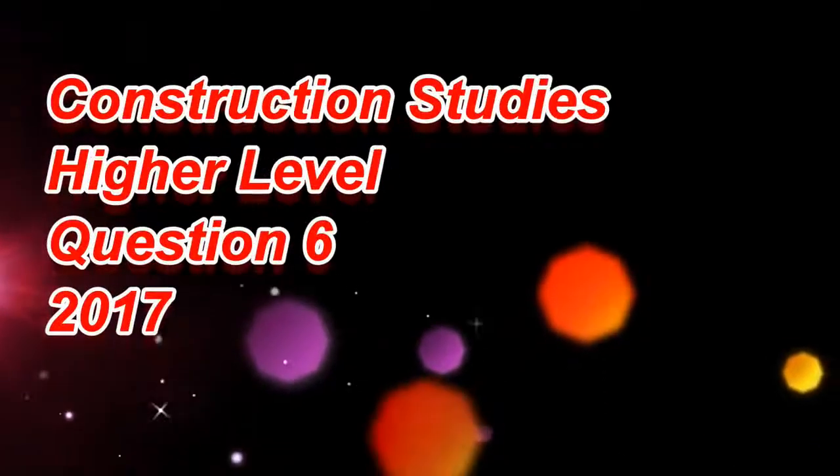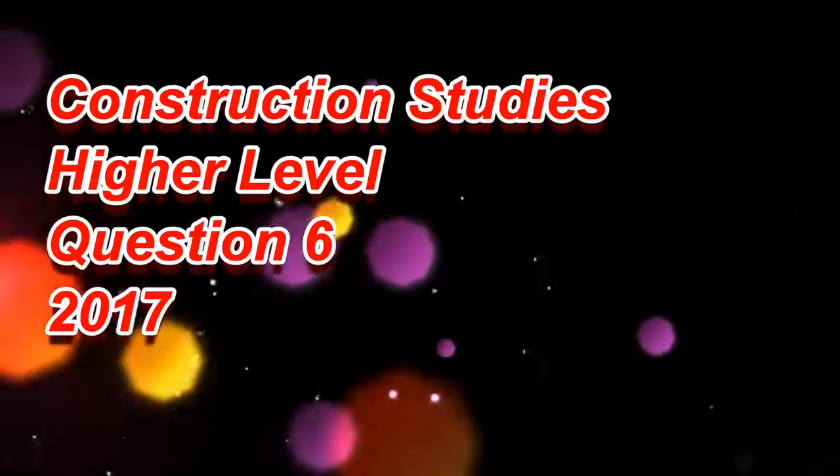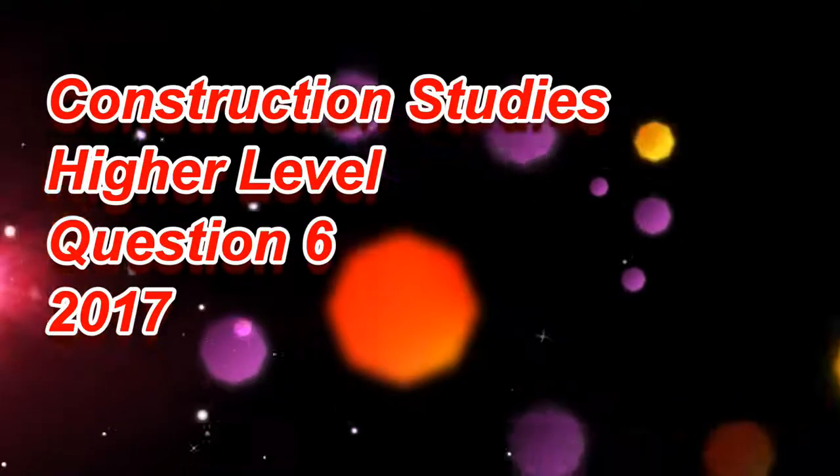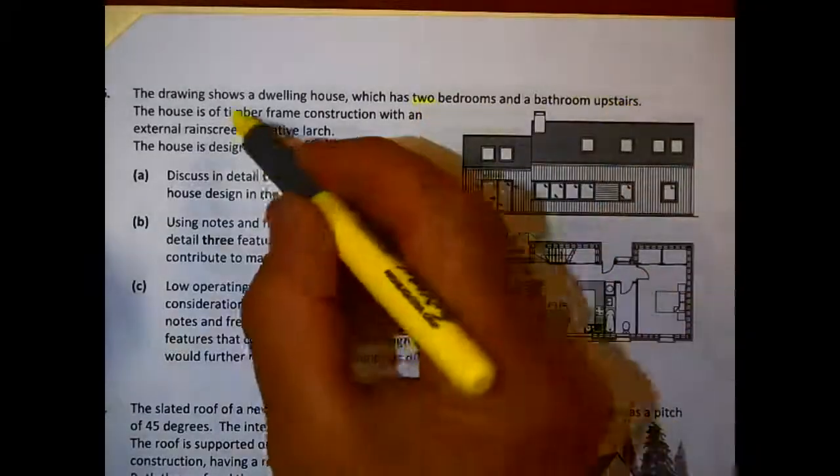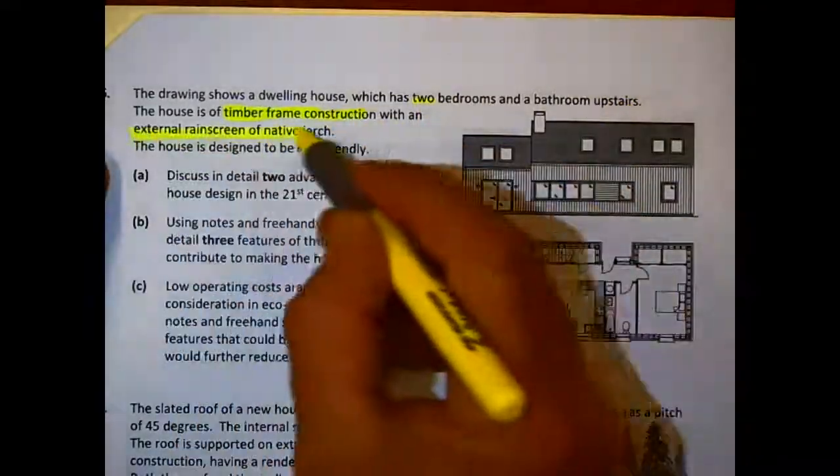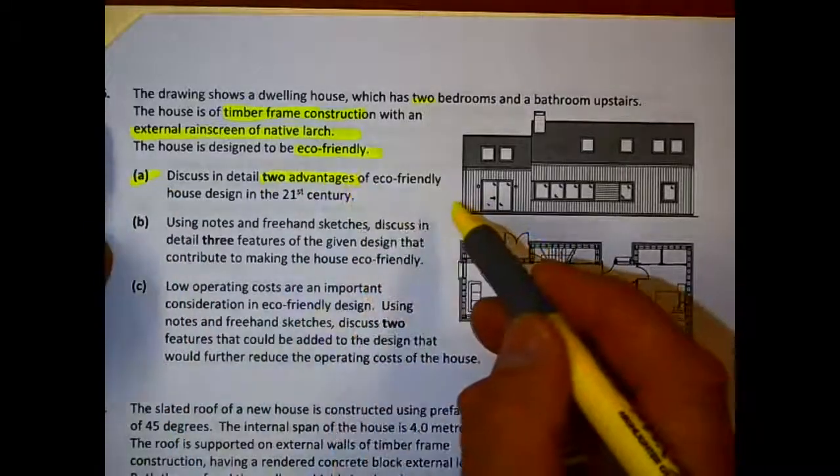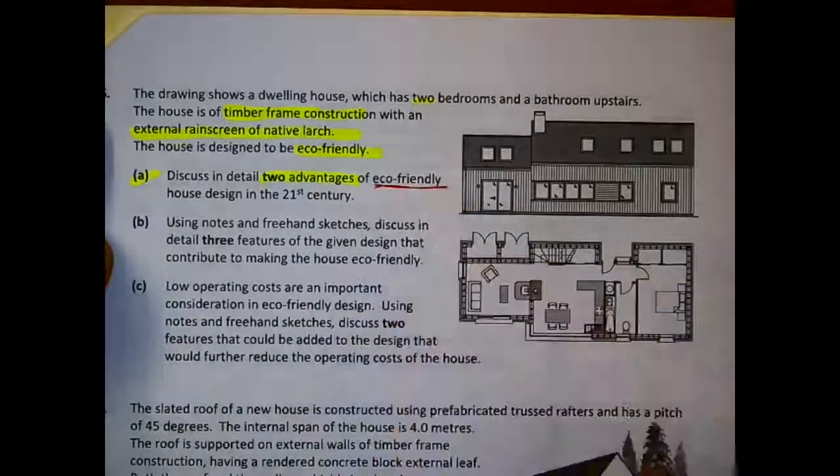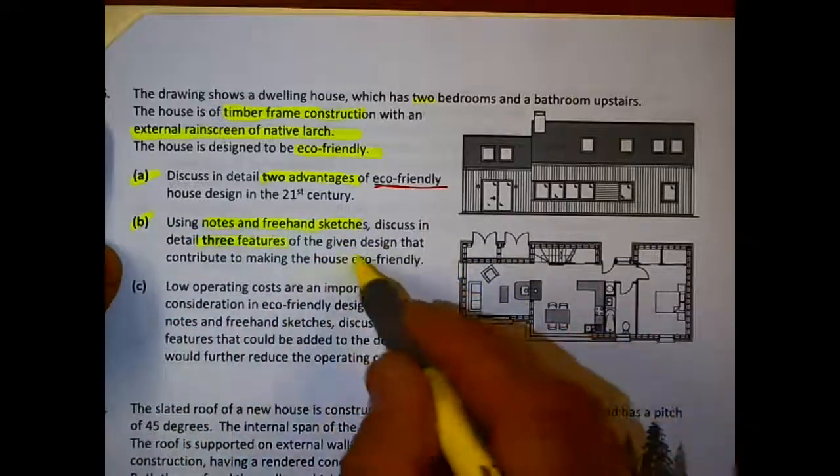In this video I'm going to take a look at question six from the 2017 higher level construction studies paper. It's a question that generally looks at low environmental impact and eco-friendly builds. The question here shows a timber frame construction with an external native larch screen, an eco-friendly build.